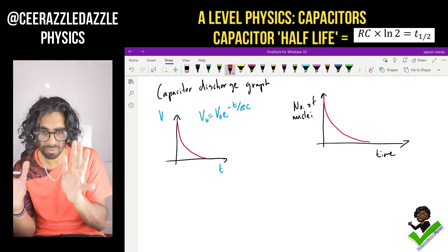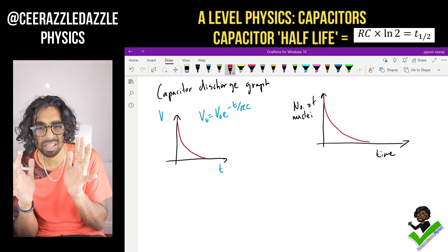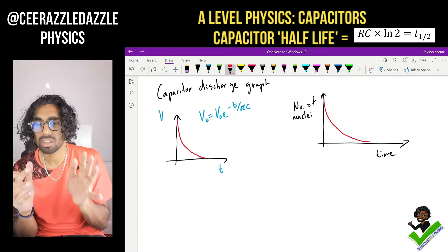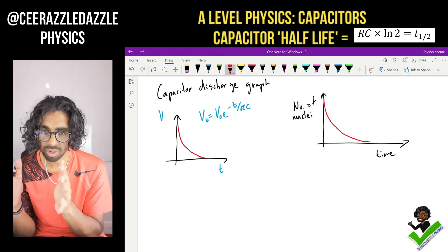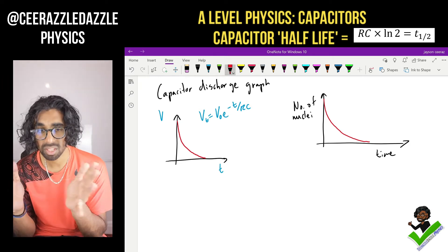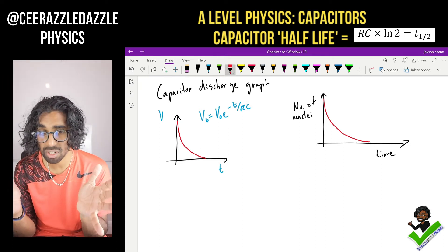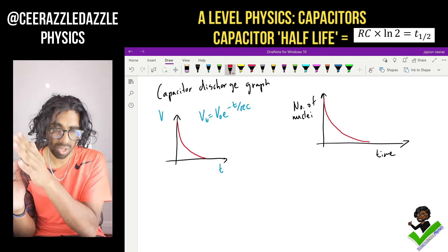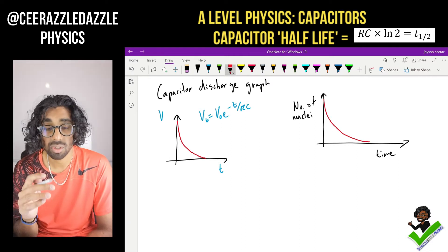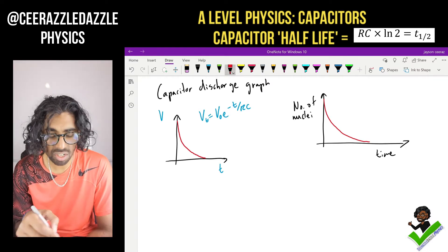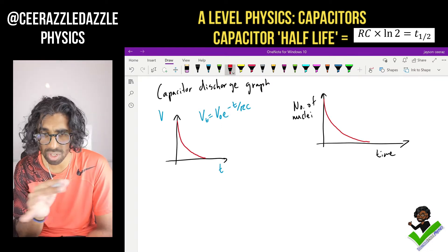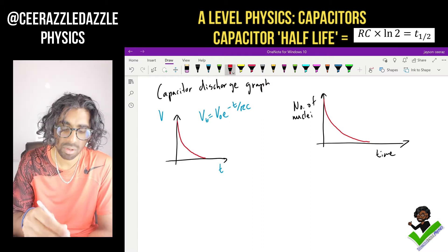Think about it. If I have like, let's say, a thousand nuclei, as time goes on they will decay. So if I was to plot a graph of number of nuclei against time — this was in the radioactivity topic — we know that it would drop down to zero eventually. So how am I going to relate this to the capacitor topic? How are we going to bridge the gap here?